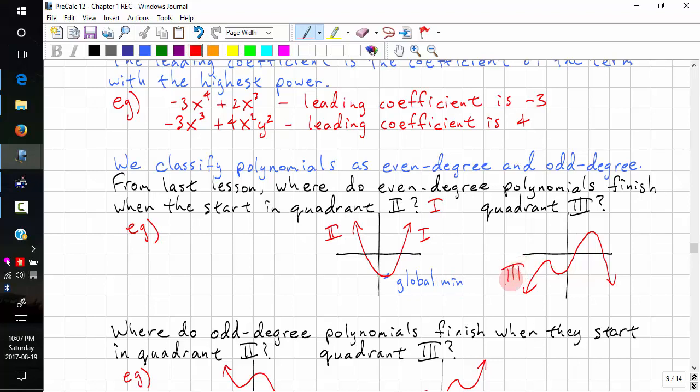And when they start in quadrant 3, they finish in quadrant 4. This one has a local max, a local min, and a global max.